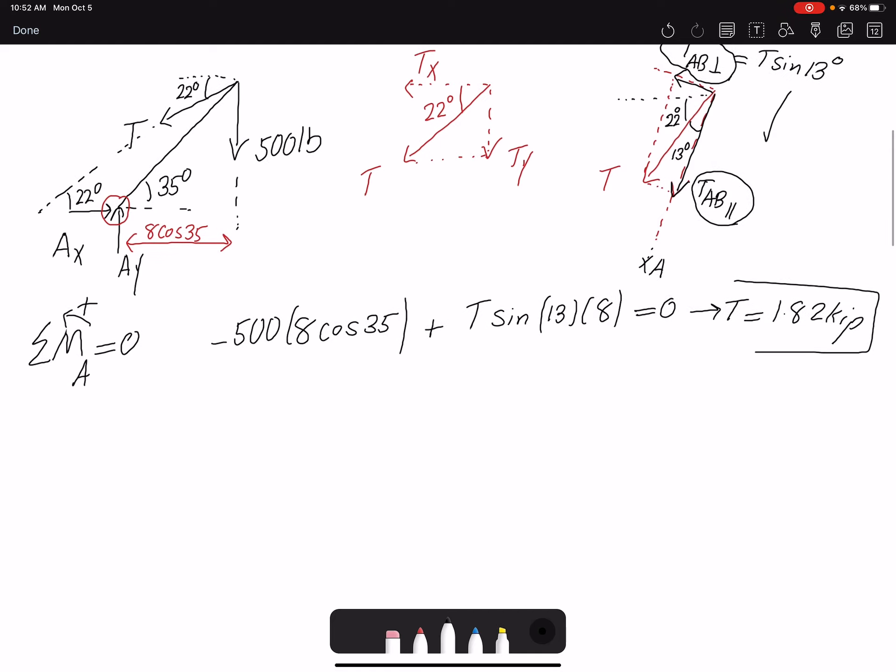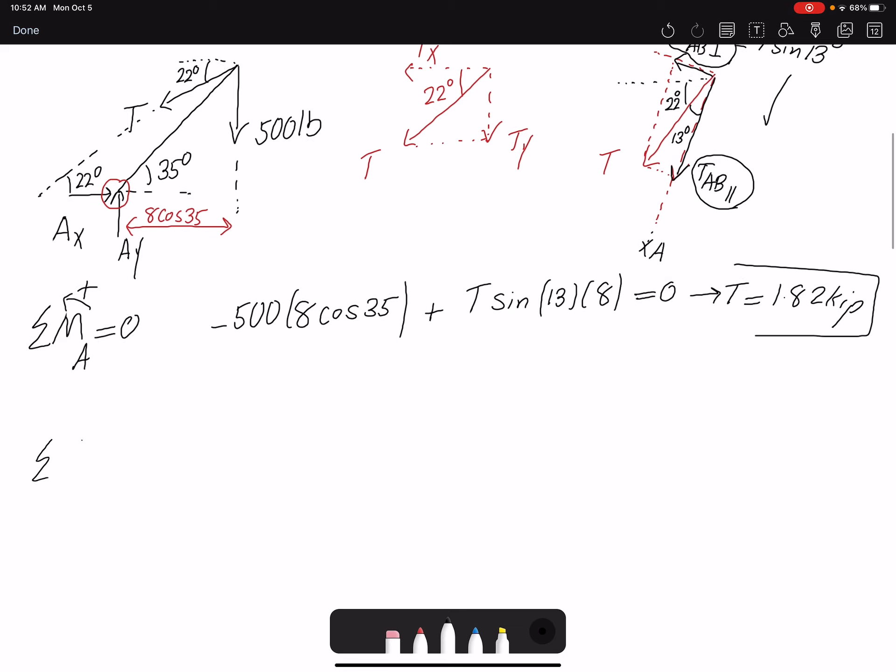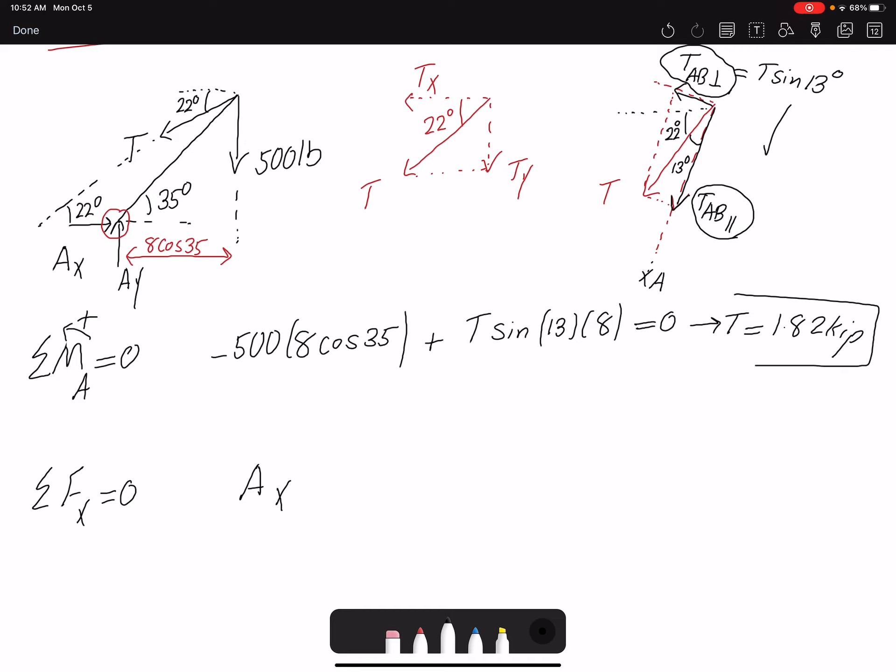And now that I have the tension I can find summation of forces in x and y. I have Ax, then I have Tx. So here I'm using this decomposition, so minus T cosine 22 equals zero. So Ax would be 1687 newtons.